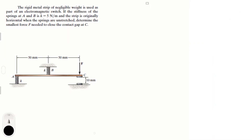This problem says: the rigid metal strip of negligible weight is used as part of this electromagnetic switch. If the stiffness of springs A and B is K at 5 N/m and the strip is originally horizontal when the springs are unstretched, determine the smallest force F to close the contact gap at C.